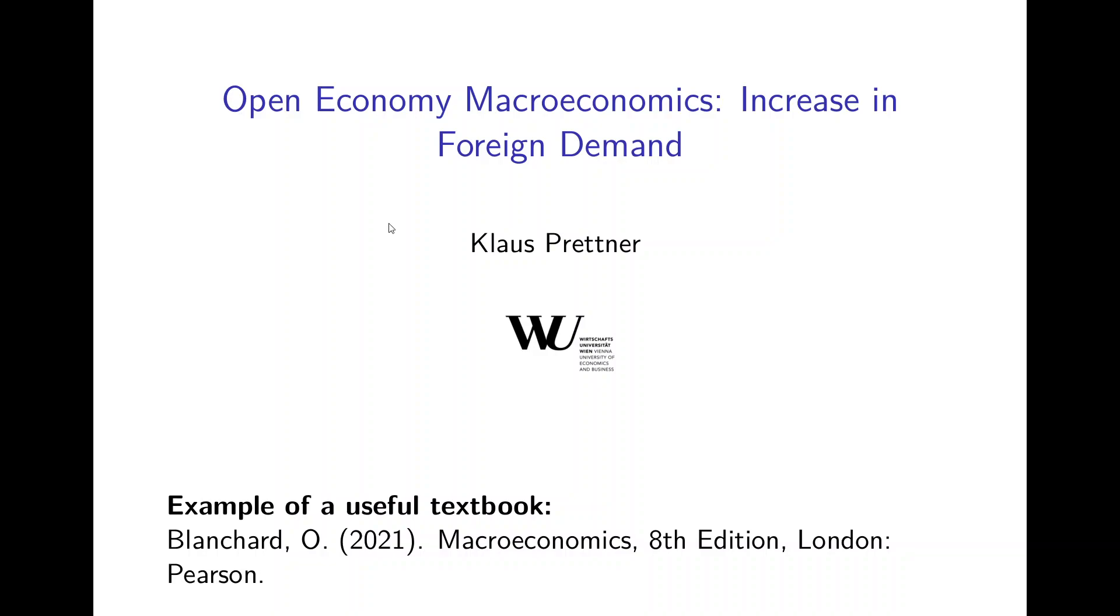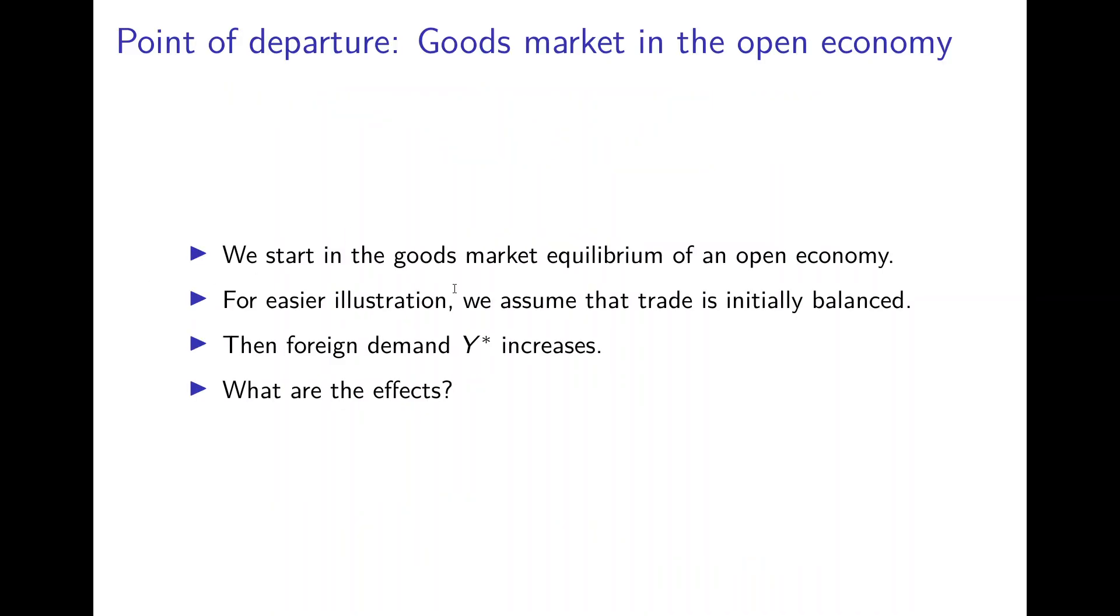Now we consider an increase in foreign demand and the effects that this has in an open economy. We again start in the goods market equilibrium of an open economy and for easier illustration we assume that trade is initially balanced, so we don't have a trade surplus nor a trade deficit.